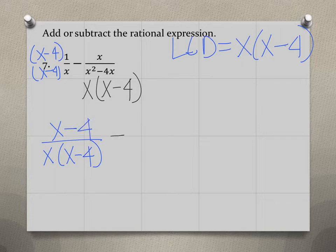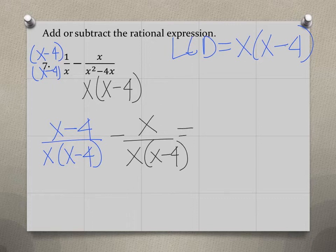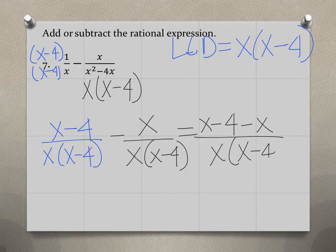Then let's just rewrite the second rational expression because our denominator was already what we needed it to be. And then now we're going to combine the top. So we have x minus 4 minus x divided by x times x minus 4.